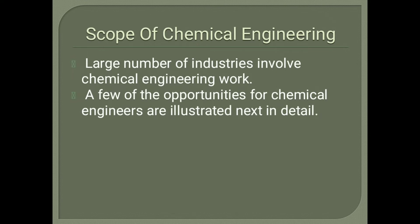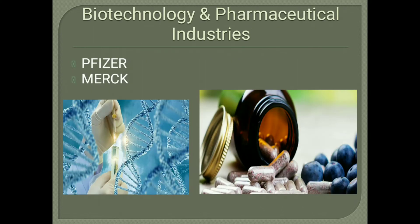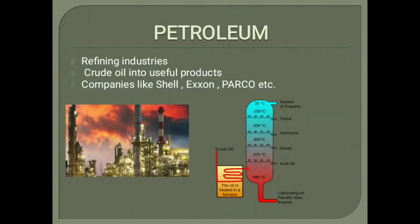The scope of chemical engineering is broad — a large number of industries involve chemical engineering work. In biotechnology and pharmaceutical industries, you design facilities that use enzymes and microorganisms to create new drugs. Companies like Pfizer and Merck are examples of this. You can also work in petroleum industries, like an oil refinery that turns crude oil from the earth into gasoline, diesel fuel, heating oil, and more.